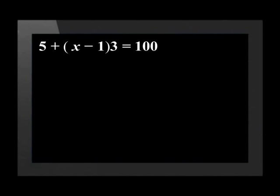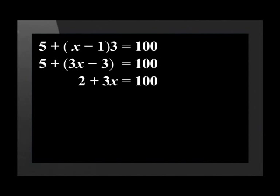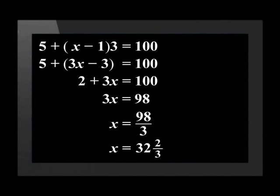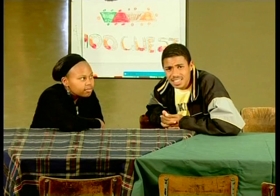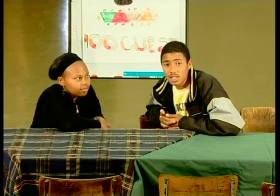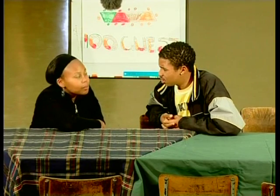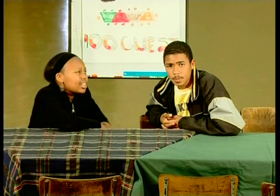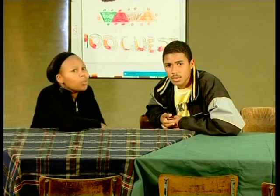We can simplify to get five plus three x minus three equals 100. That's two plus three x equals 100. To get x on its own, we need to subtract two from both sides to give three x equal to 98. Then divide by three and x will be 32 and two-thirds. An answer of 32 and two-thirds? Surely we can't choose 32 and two-thirds of a table. Obviously my mum is not going to cut off a piece of a table to seat 100 people. We need 33 tables.